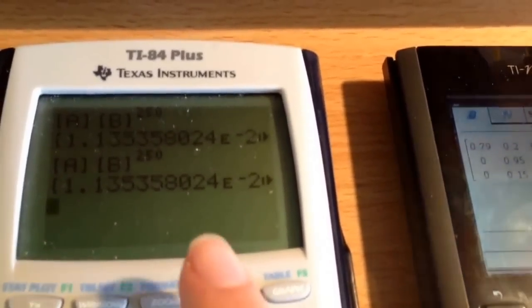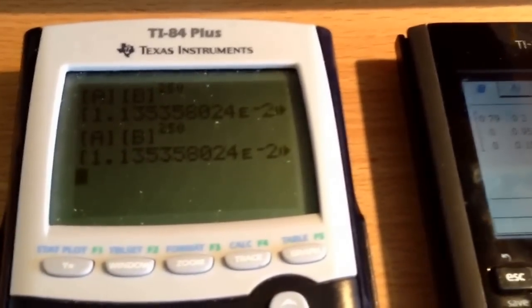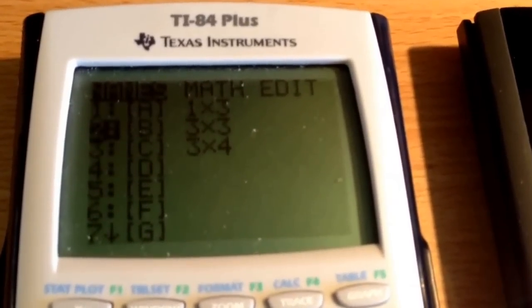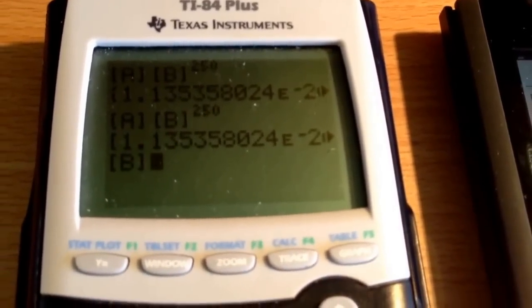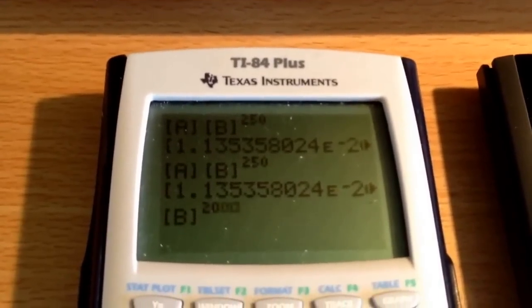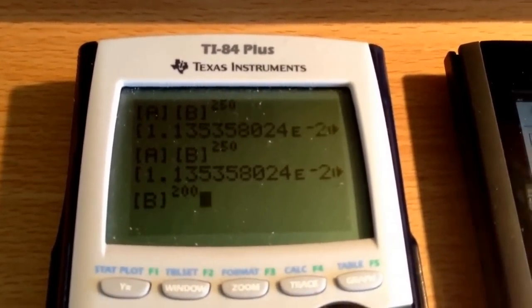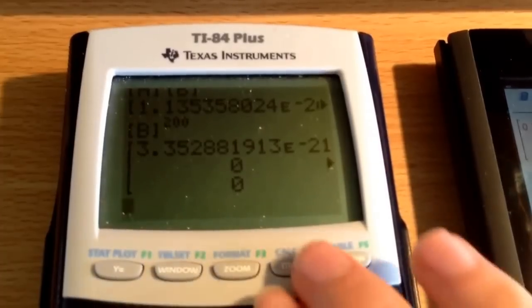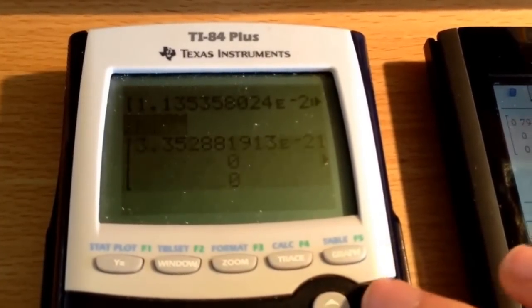So I've already put in the matrix B, so I'm just going to go ahead and select it from the matrix window here. It's a 3x3 matrix, and I'm going to raise it to the power of, let's start with 200 actually, instead of 100, just to make things interesting. And there we go, we get the result there.